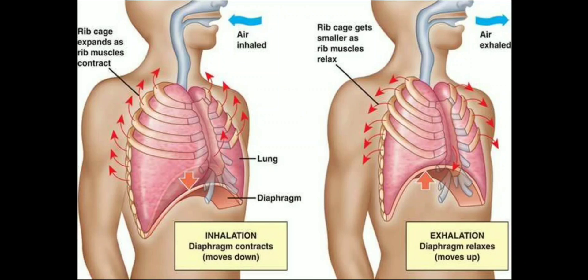Now the process of exhalation begins. The diaphragm starts moving up, creating a high pressure zone inside the lungs. This high pressure causes the air to be exhaled out or pushed out of the lung. Thus most of the air is moved out of the lung and the breathing process is completed.